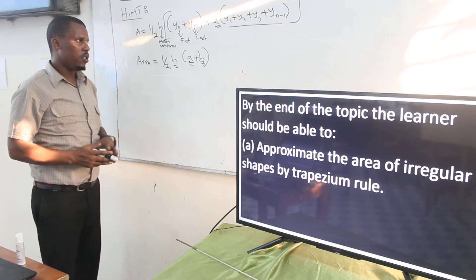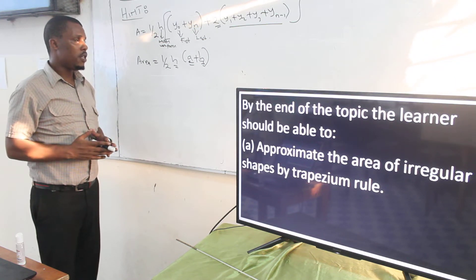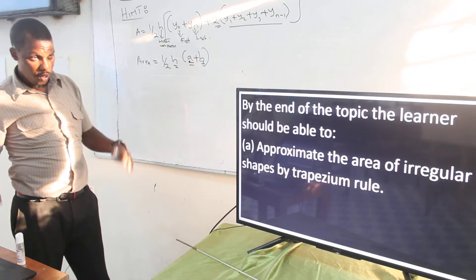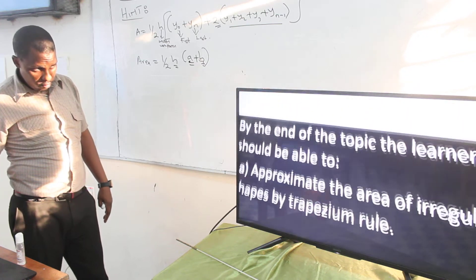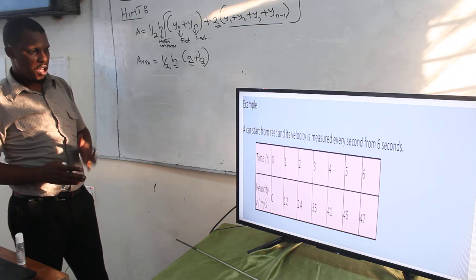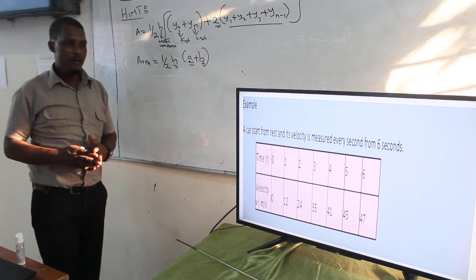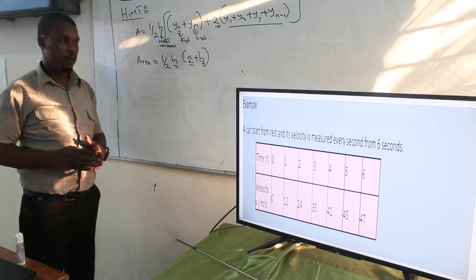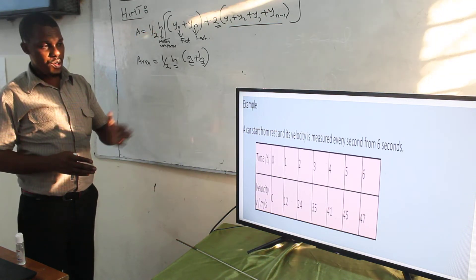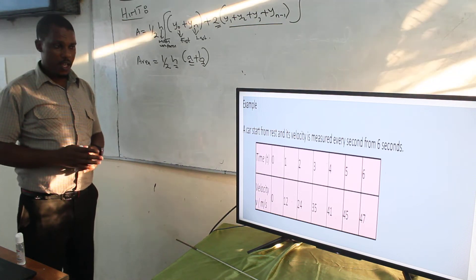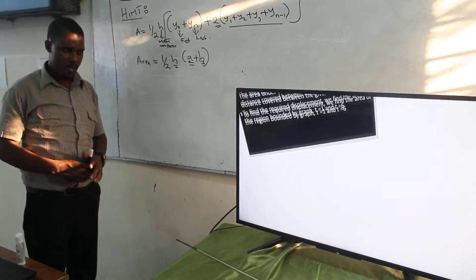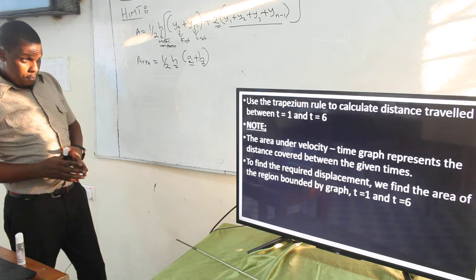This formula is in the mathematical table. Our task is to be able to apply it when we have a question of that nature. Let me show you the way the question is going to be framed. The question says: a car is starting from rest and its velocity is measured every second for 6 seconds. You are given a table with time and velocity, and you are told to use the trapezium rule.